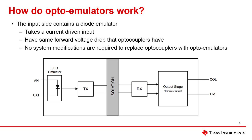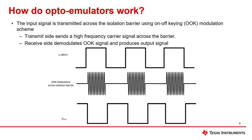and therefore require no system modifications to replace optocouplers with optoemulators. The input signal applied to the optoemulator is transmitted across the isolation barrier using on-off-keying modulation, or OOK for short,